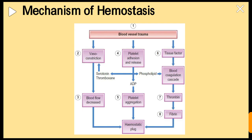The process of hemostasis takes place due to three phenomena occurring simultaneously: vasoconstriction, platelet adhesion and release forming the hemostatic plug by platelet aggregation, and the tissue factor which initiates the blood coagulation cascade. All three collectively lead to hemostatic plug formation.